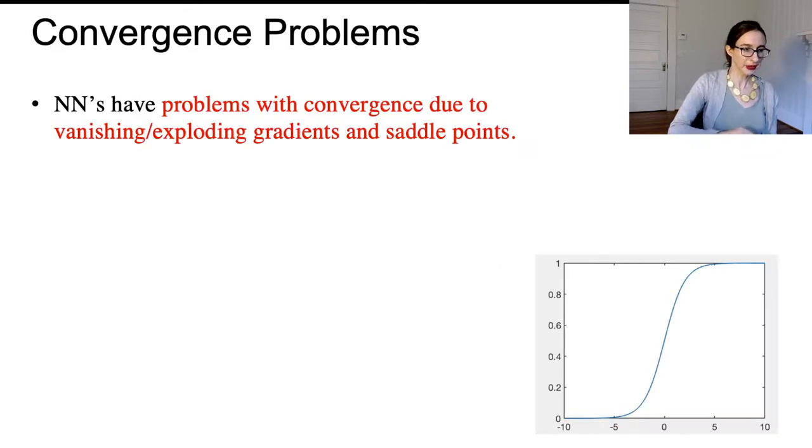The same problem still exists today. Neural networks have problems with convergence due to vanishing and exploding gradients and saddle points because their decision surfaces are pretty wonky.